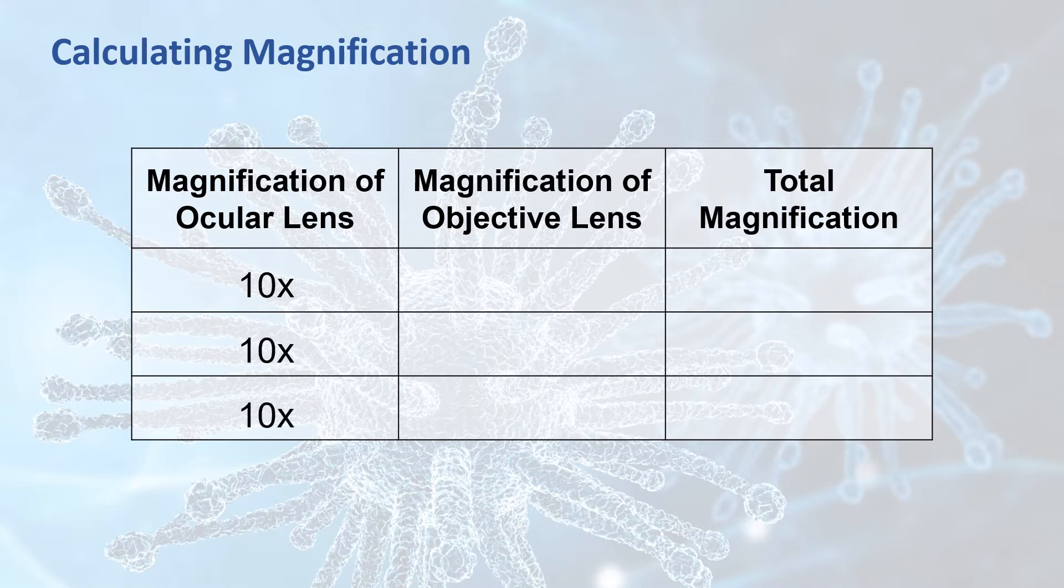The magnification of the objective lens does depend, however, on what lens you're using. In our lab, the lowest powered lens magnifies the specimen by 4 times, the medium powered lens magnifies by 10 times, and the highest powered lens magnifies by 40 times.